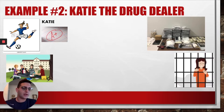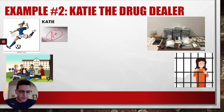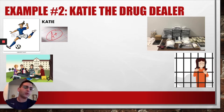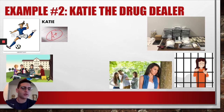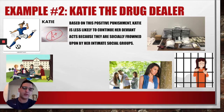Katie is expelled from school, kicked off the soccer team, and spends time in prison for committing a felony. Her parents kick her out of the house, and none of her teammates, friends, or family wish to spend time with or be associated with her. This is an example of positive punishment — the consequences for a socially negative action are something undesirable, in this case the prison term. But for Katie, the punishment extends more internally through social ostracism and disappointment by her social groups. Based on this positive punishment, Katie is less likely to continue her deviant acts because they are socially frowned upon by her intimate social groups.